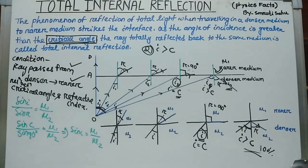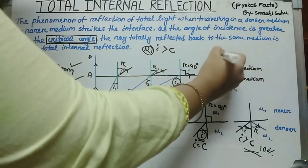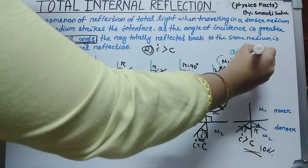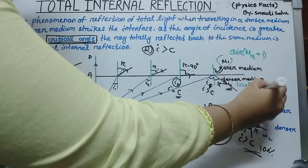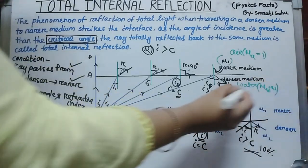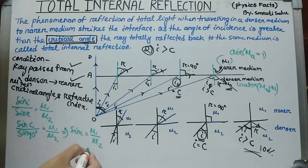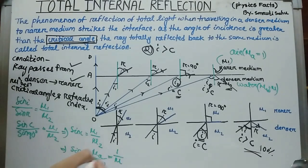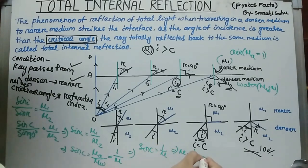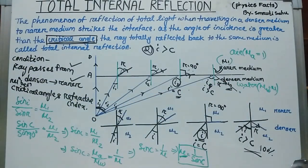If we consider the rarer medium to be air with refractive index mu_a = 1, and the denser medium to be water with refractive index mu, then sin c = 1/mu, or equivalently mu = 1/sin c. Here mu is the refractive index of the second (denser) medium.